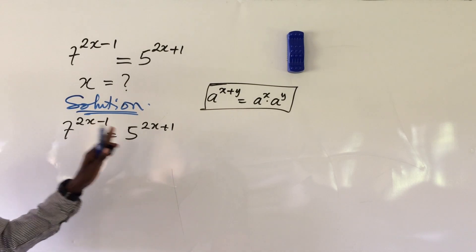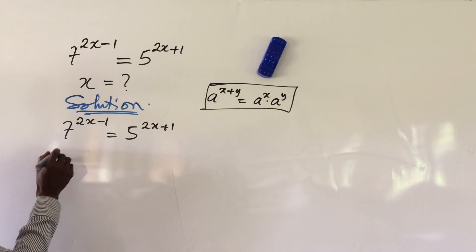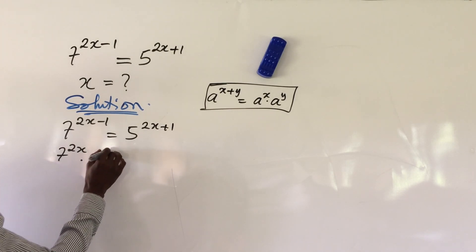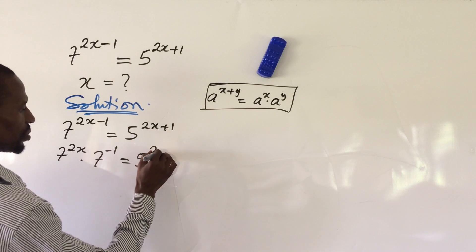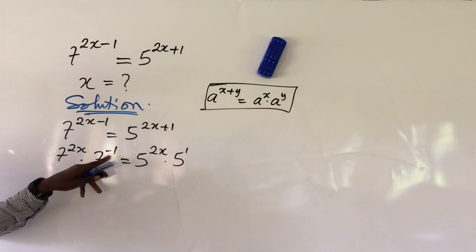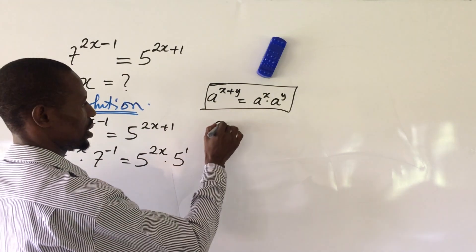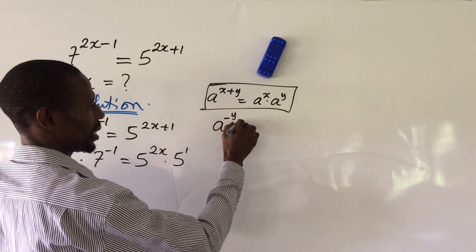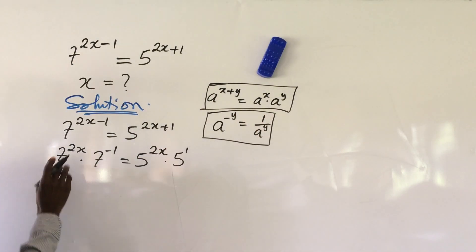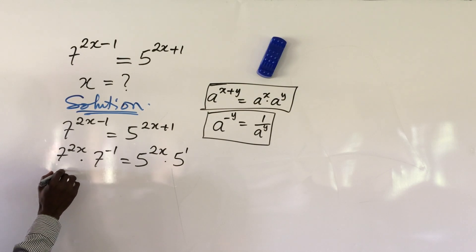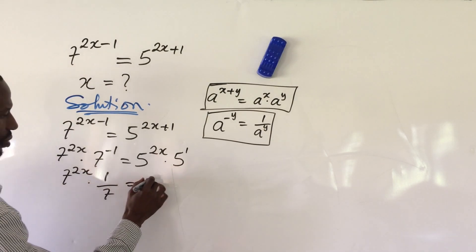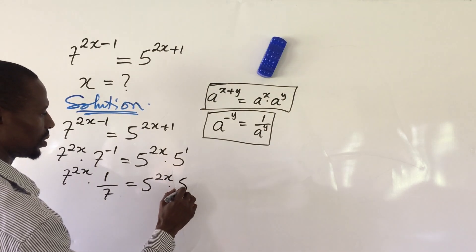We can rewrite this expression on both sides of the equation. So we have 7 to the power of 2x times 7 to the power of minus 1, equal to 5 to the power of 2x times 5 to the power of 1. Here we have a negative power, so we can rewrite it according to the law: a to the power of minus y equals 1 over a to the power of y. So 7 to the power of minus 1 becomes 1 over 7. We have 7 to the power of 2x times 1 over 7, equal to 5 to the power of 2x times 5 to the power of 1.